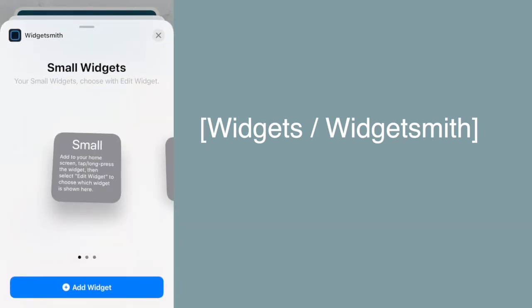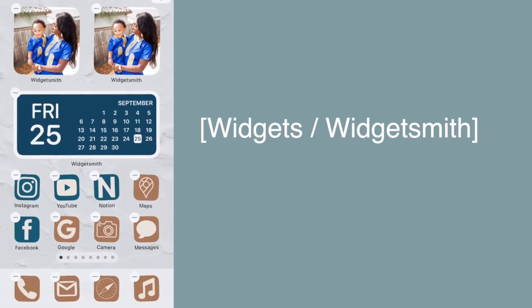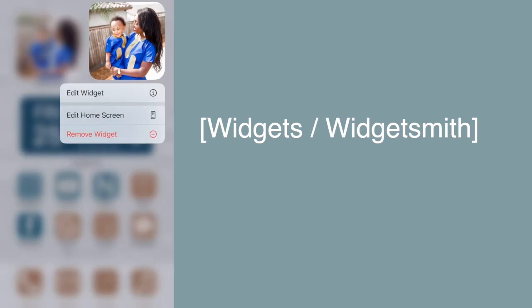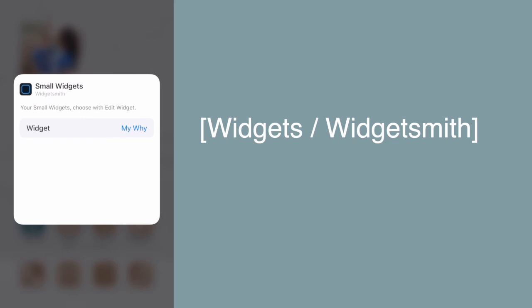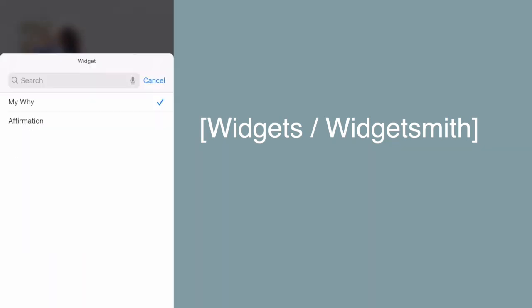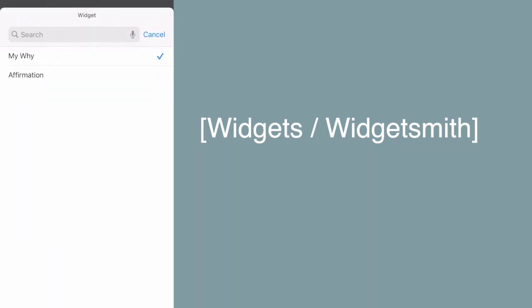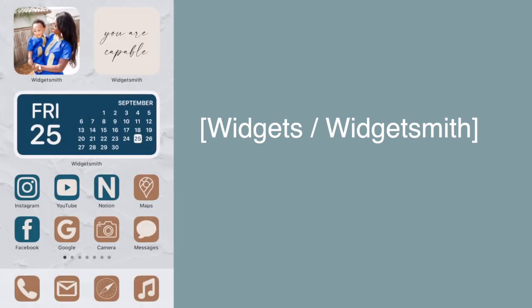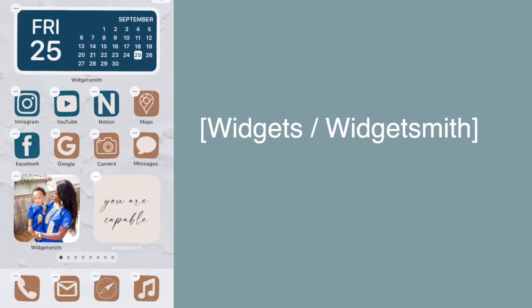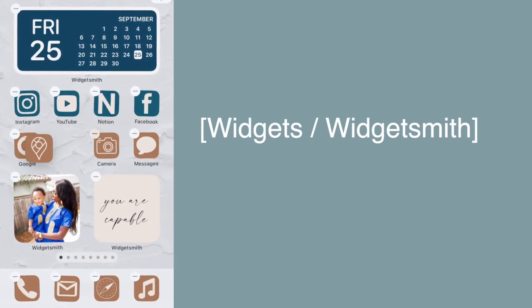To edit a widget already on your home screen, long press on it until it starts moving, then select 'Edit Widget.' Tap Widget again to see the list of widgets you created in Widgetsmith, select the one you want, and it will update on your home screen. After that, rearrange your icons to how you want your home screen to look.